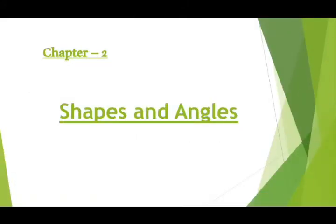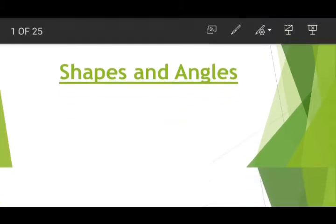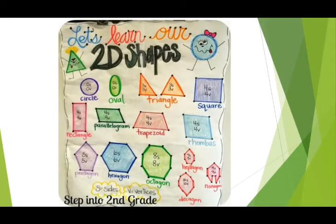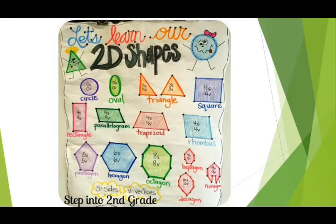Hello students, today I am starting the new chapter number two: Shapes and Angles. Let's learn our 2D shapes — circle, oval, triangle, square, rectangle, parallelogram, trapezoid, rhombus, pentagon, hexagon, octagon, heptagon, decagon, nonagon. These shapes are called 2D shapes.